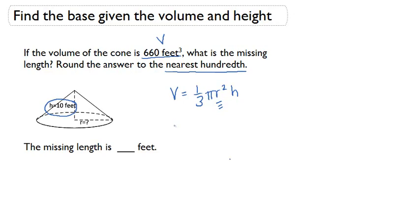Let's go ahead and plug in the information we know. We know that the volume is 660. We know that we're using pi equals approximately 3.14. We know the radius r squared is what we're solving for. And lastly, the height is 10 feet.